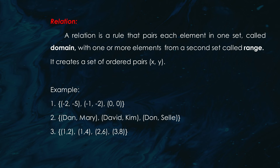Here we have a few examples of relations. Notice how each element from the domain is paired with an element in the range — it could be anything from numbers to names. For instance, the set with pairs Dan and Mary, David and Kim, and Don and Sel relates people by pairs. Or if we use numbers such as the pairs (1,2), (2,4), and (3,6), we can see a clear relationship: each y value is twice the x value.